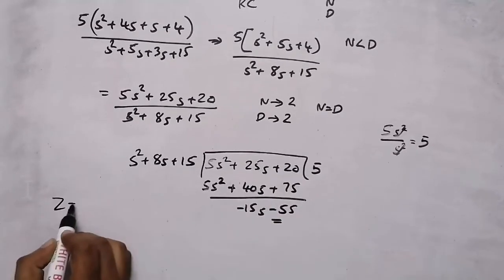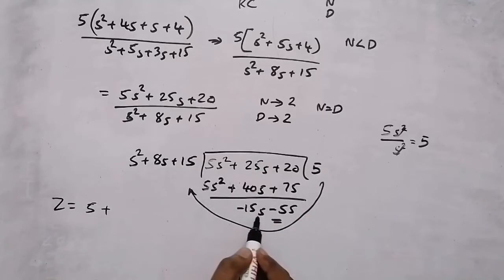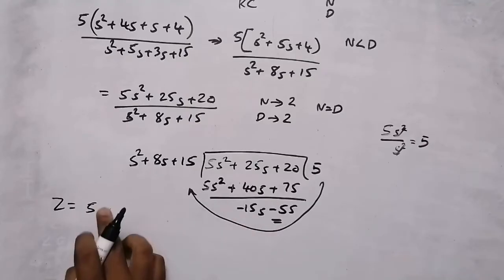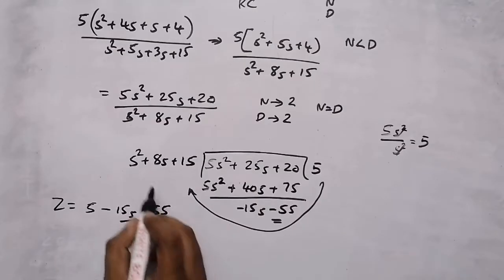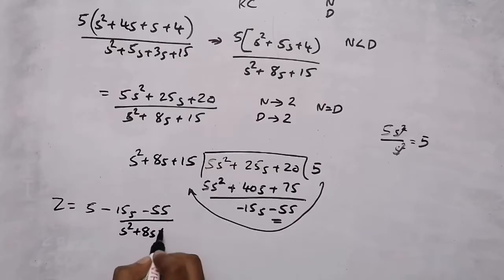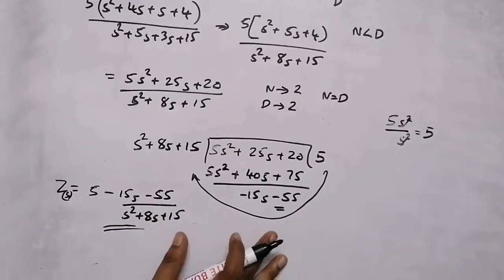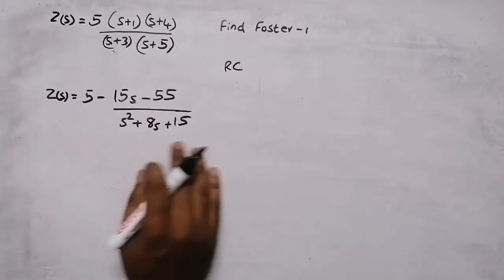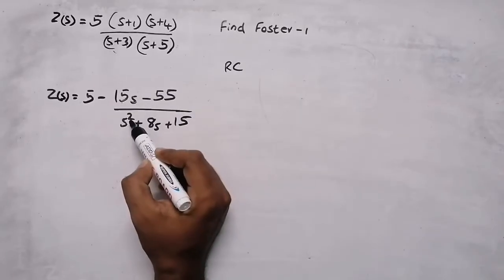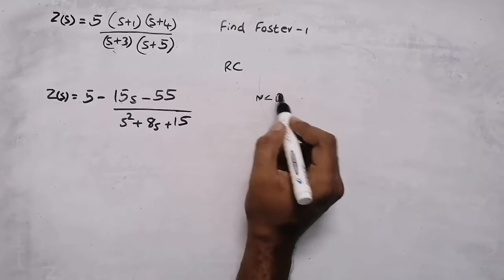Our new impedance function becomes 5 plus the remainder: minus 15s minus 55, divided by s squared plus 8s plus 15. Now we can see that the degree of numerator is 1 and the degree of denominator is 2, so the degree of numerator is now less than the degree of denominator. Now we can do partial fraction.